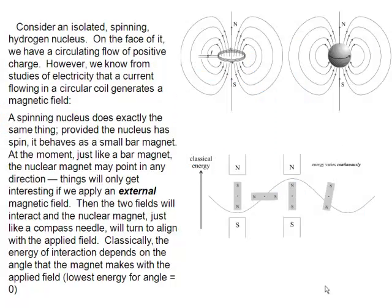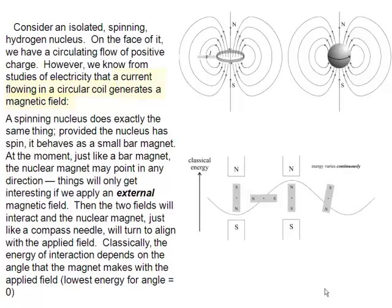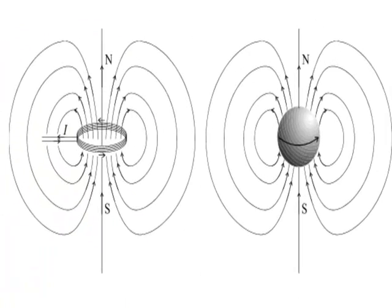So let's consider our nucleus which is spinning. If it's spinning, we can think of it as a spinning positive charge. If you've ever had a course on electricity, you'll have learned that if you have a rotating flow of current, that generates a magnetic field. So we can think of our spinning hydrogen nucleus as generating its own little magnetic field.